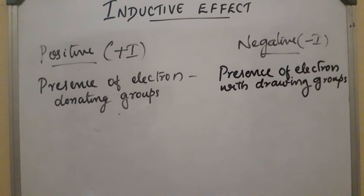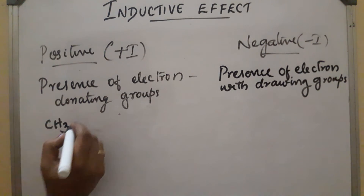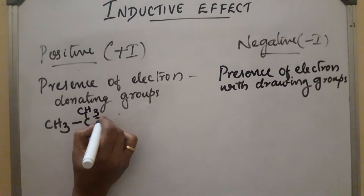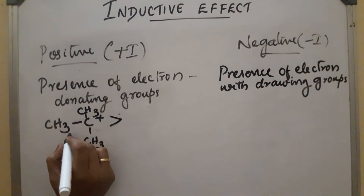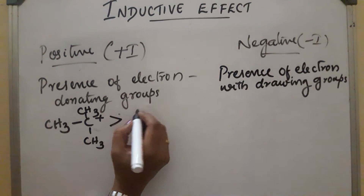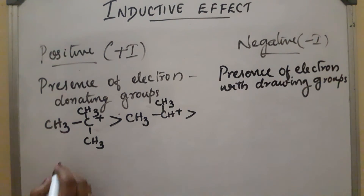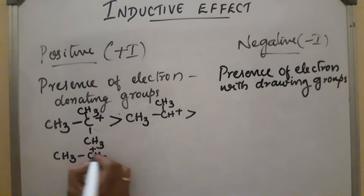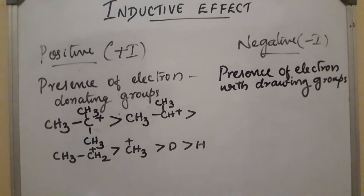For +I effect, the main groups include CH3, which is an electron donating group. As the number of electron donating groups increases, the +I effect is stronger and the compound is more stable. So a tertiary compound is more stable than a secondary, which is more stable than a primary: (CH3)3C+ > (CH3)2CH+ > CH3CH2+ > CH3+.